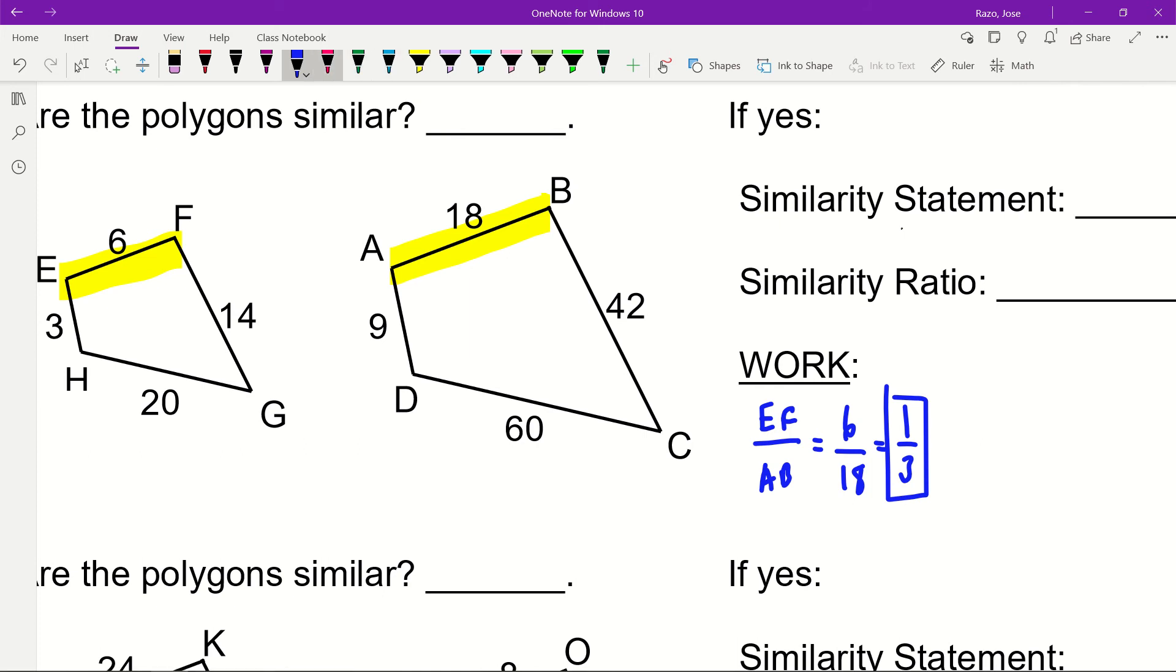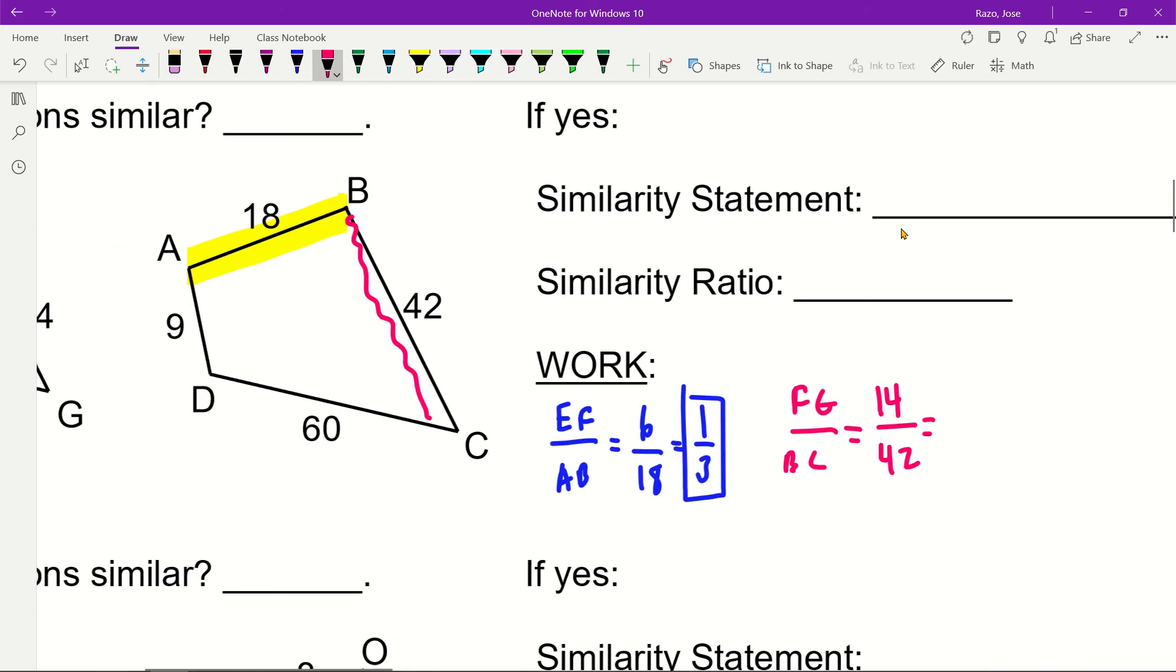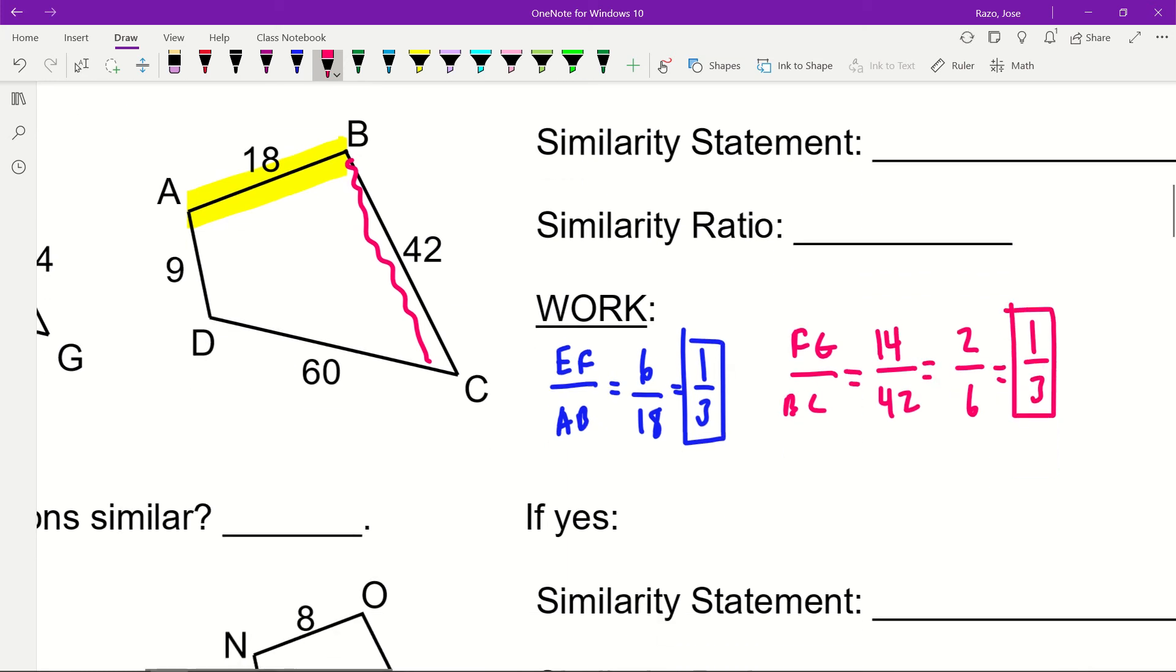Next, if I'm looking for FG, I have FG over BC. So FG is 14 and BC is 42. Fourteen divided by seven is two, forty-two divided by seven is six. Reduce it, you get one-third. Look at that, there's one-third again. So far so good.